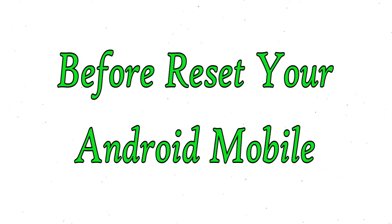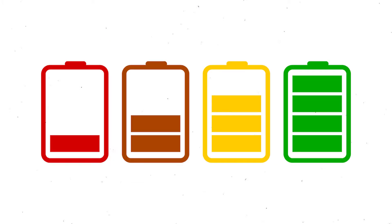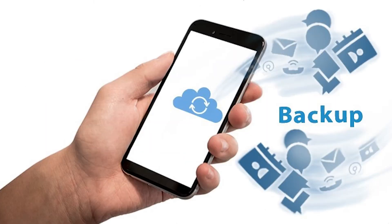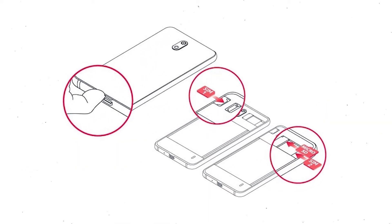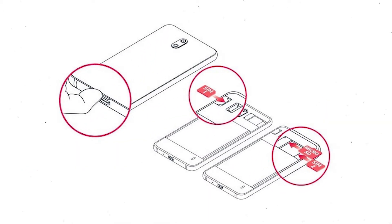Before resetting your mobile, charge your mobile if the battery is less than 50%. You need to make sure that the data on your device is backed up so you do not lose valuable photos or documents. Reset deletes all your mobile data, so you better back up all important data and remove SIMs and SD card.